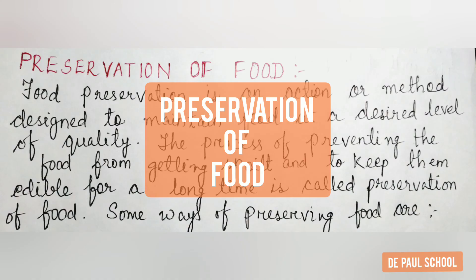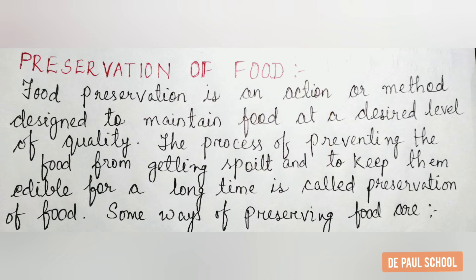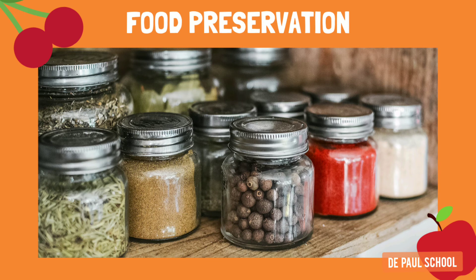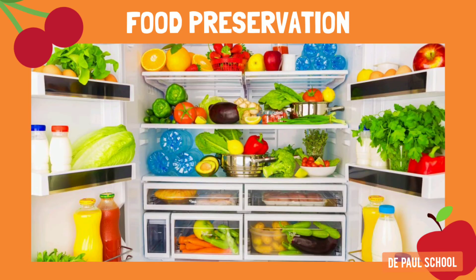Let us move on to the last topic of this lesson: preservation of food. Food preservation is an action or method designed to maintain food at a desired level of quality. The process of preventing food from getting spoiled and keeping it edible for a longer duration of time is called preservation of food. There are some ways of preserving food: boiling, canning and bottling, salting, dehydrating or drying, freezing, and pickling.